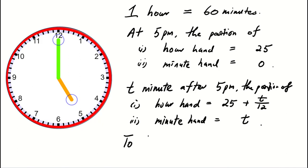To form a 90-degree angle between these two hands, their positional difference must be 15 units.